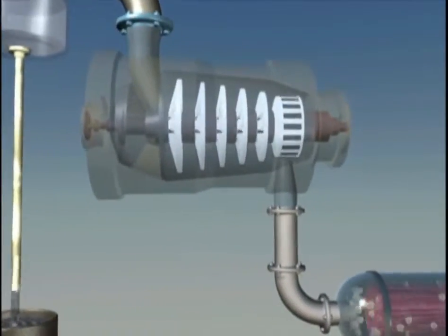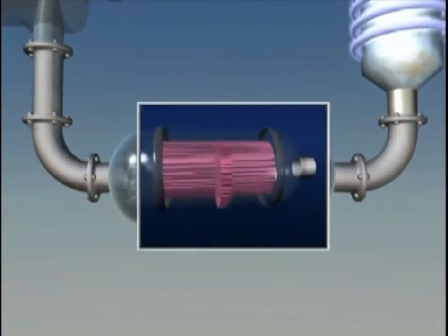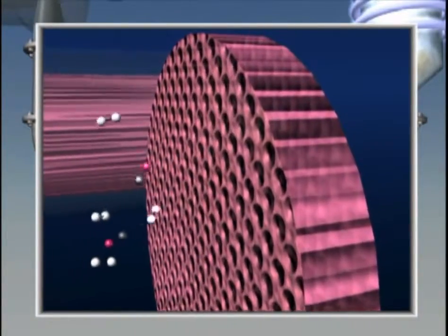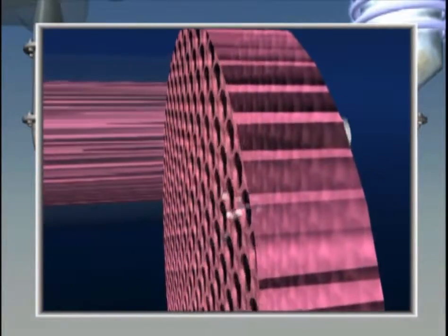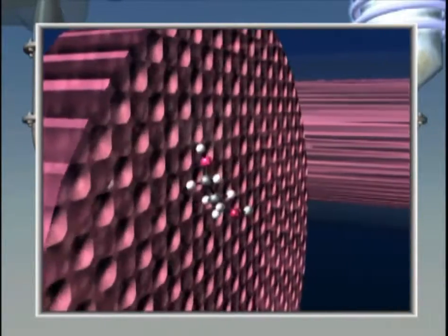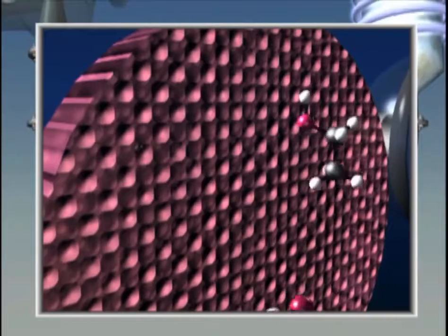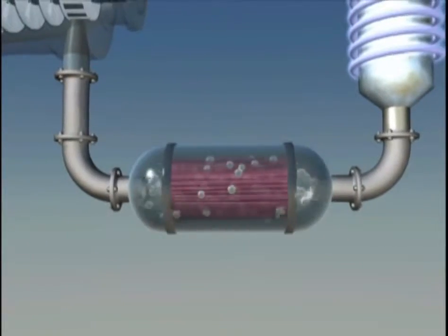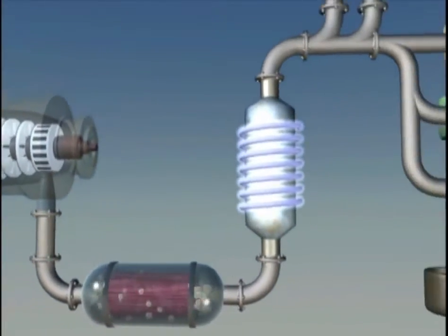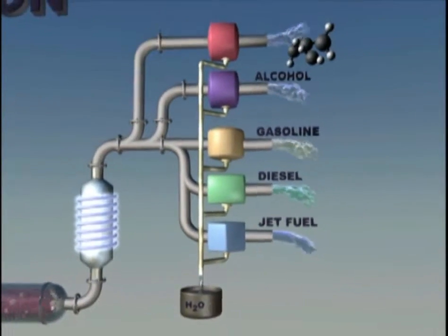The pressurized hot syngas is then passed over a catalyst to form a liquid. The catalyst is contained in a reactor and the syngas is passed through the reactor where the carbon monoxide and hydrogen molecules combine to form larger molecules. These molecules are subsequently cooled, condensed, and refined into clean renewable transportation fuels and other products.